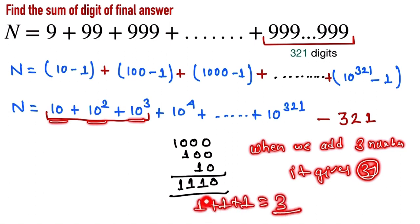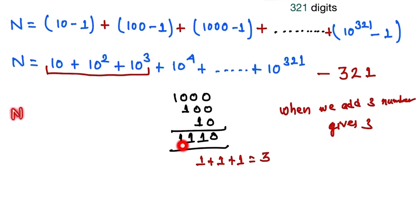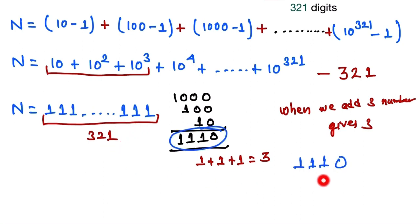So when we add 321 digits, it gives 321 ones: 111...111.